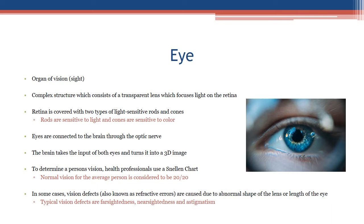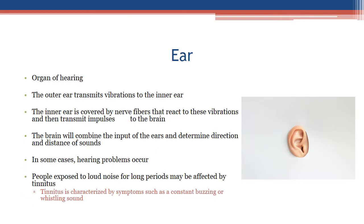To determine a person's vision, health professionals use a Snellen chart. Normal vision is considered to be 20/20. In some cases, vision defects — also known as refractive errors — are caused by an abnormal shape of the lens or length of the eye. Typical vision defects include farsightedness, nearsightedness, and astigmatism.